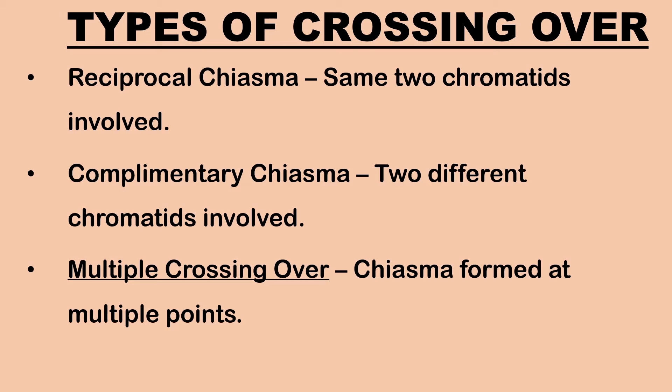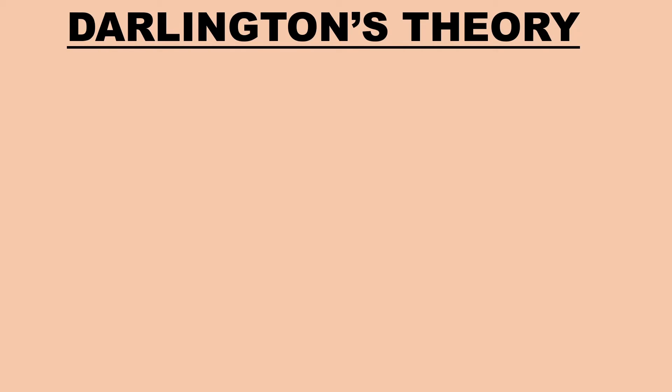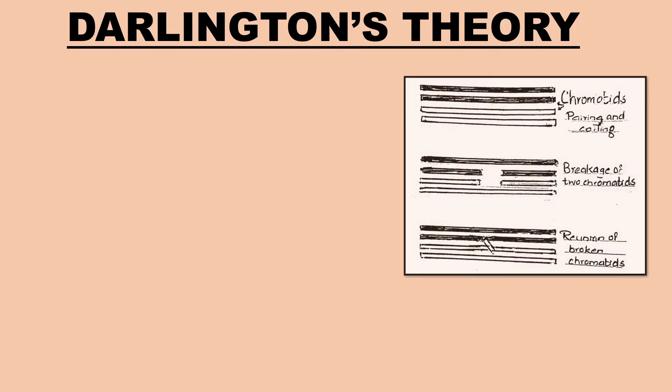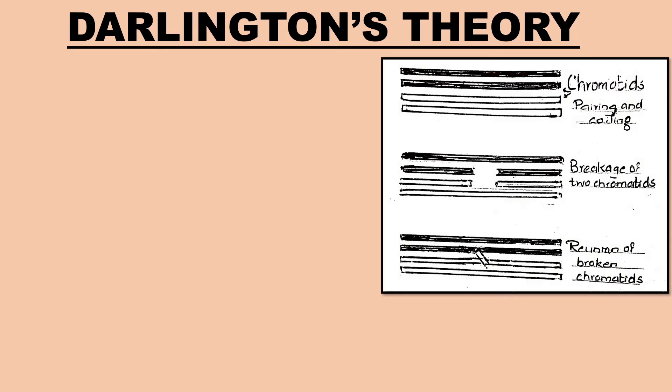Multiple crossing over occurs when chromatids break and crossing over takes place at multiple places in the same chromosome pair.